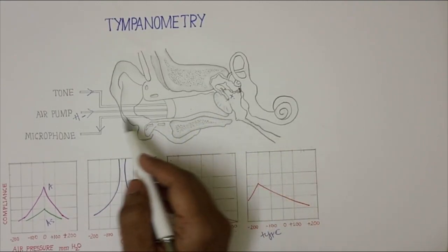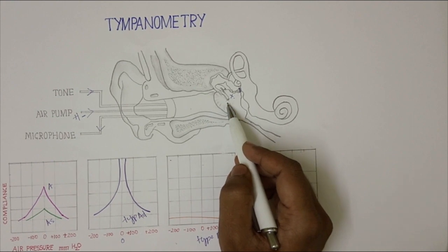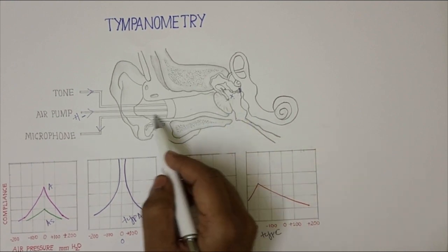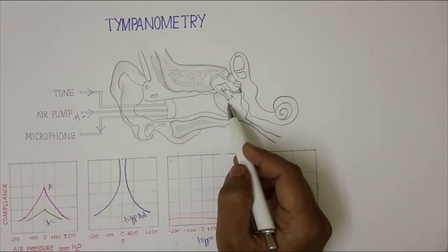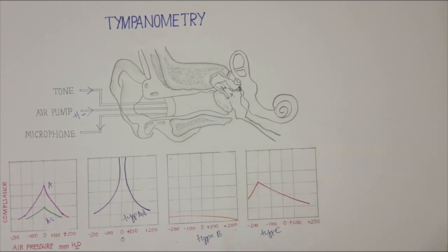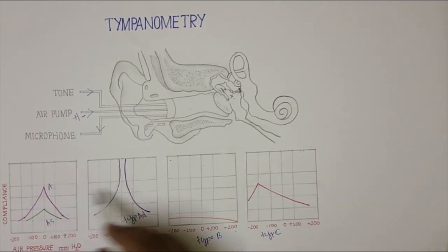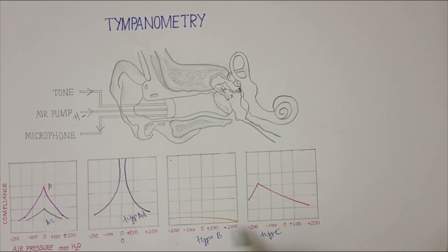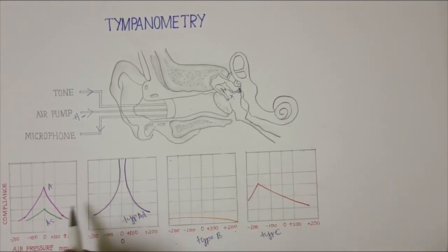More the sound reflected back, that means more resistance. Less the sound reflected back, that means less resistance is given by these structures. If you see these various tympanograms, these are called Jerger's classification of tympanograms.